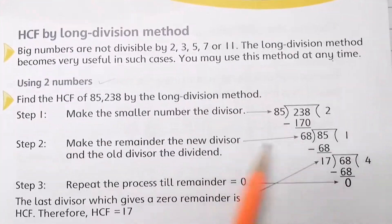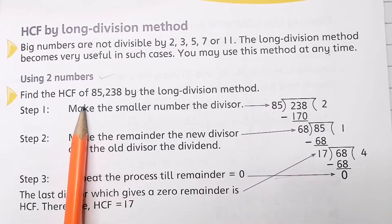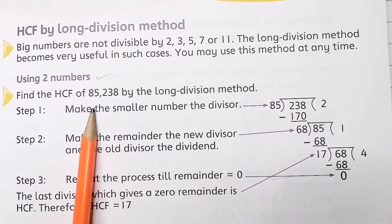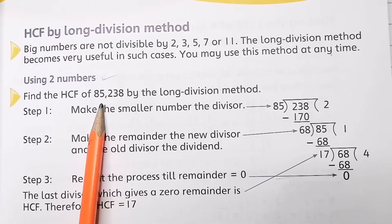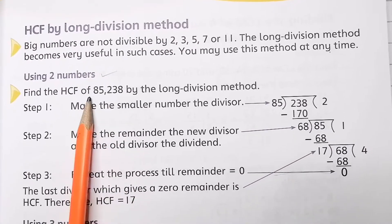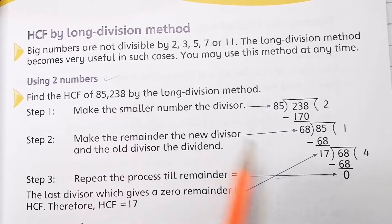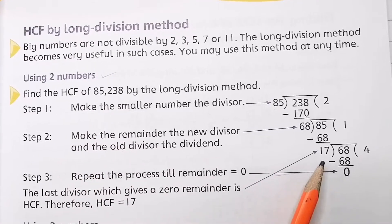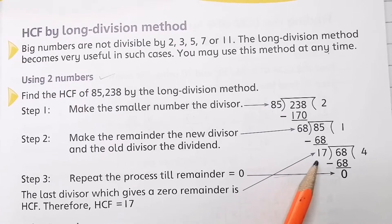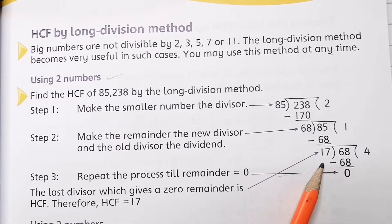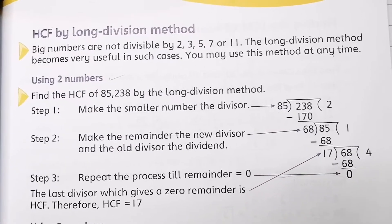Now, HCF by long division method. In this method, suppose there are two numbers given. You divide them, and the last divisor — that is, the last number used as divisor when the remainder becomes zero — is called the HCF.